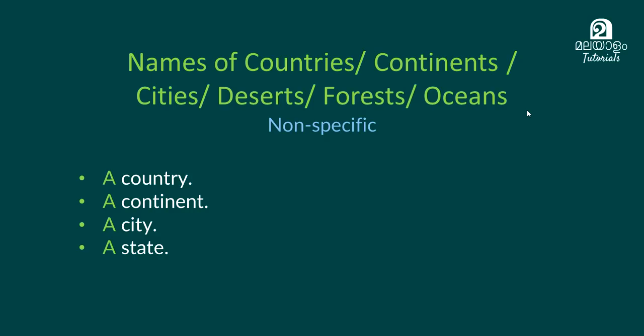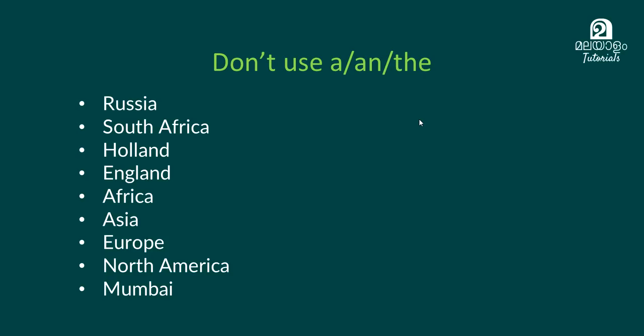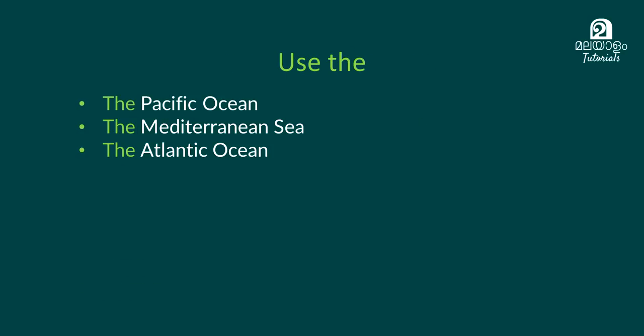So, if we come to a village, a city, a country — we have specific names. We have the United Arab Emirates. Normally we have: India, Russia, Holland, England, Africa, Asia — these do not use 'the'. But the Pacific, the Mediterranean Sea, the Atlantic Ocean — these use 'the'.